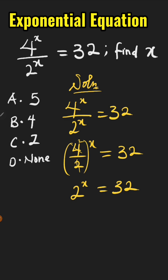Now we express 32 in base 2. We have 32 equals 2 raised to the power of 5, meaning 32 is 2 times 2 times 2 times 2 times 2.